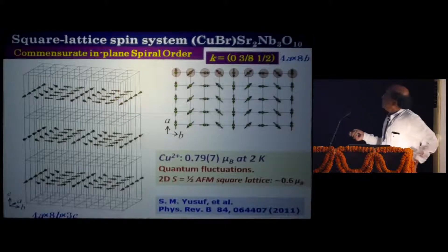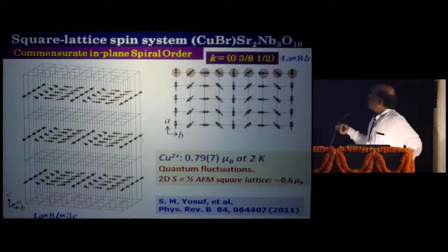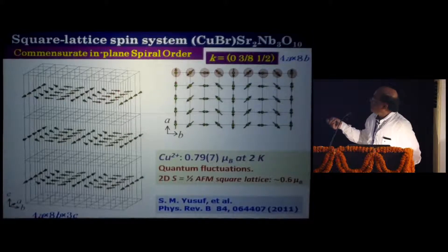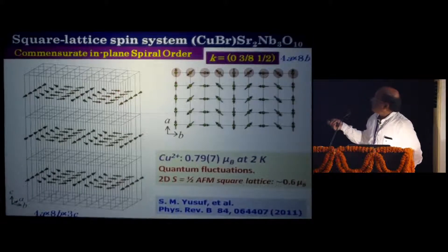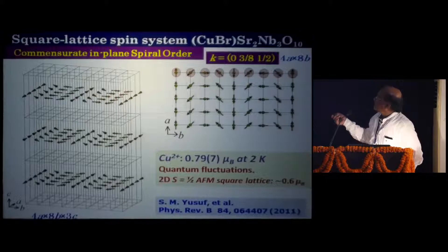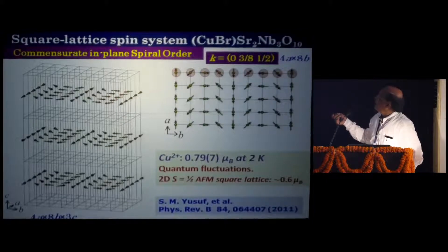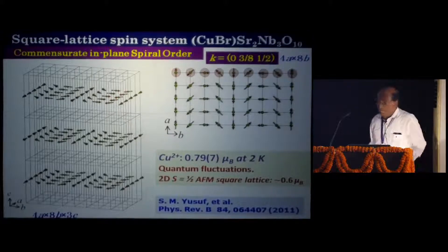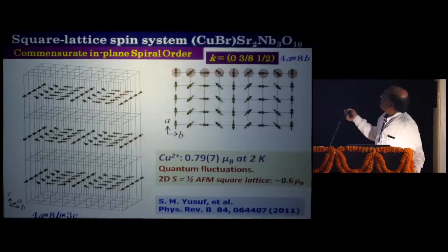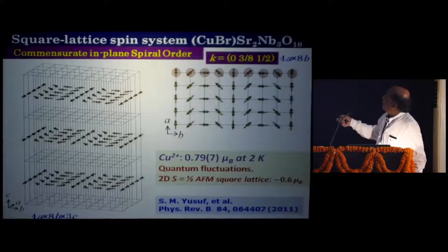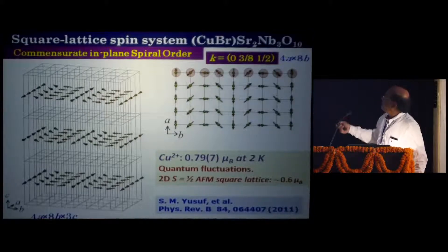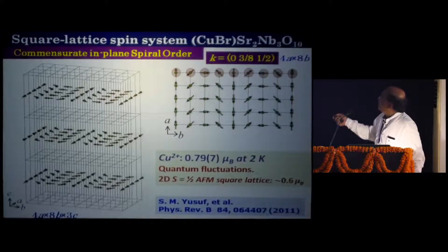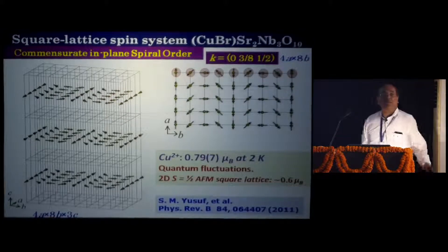By doing a neutron diffraction experiment at 2 Kelvin, that is below the ordering temperature, we do get this kind of spiral structure in the copper plane. You see the copper spin is rotating in a spiral manner, and this is called propagation vector. What I have plotted here 4A by 8B, A is in the AB plane, and this is my C axis. In the AB plane 4A by 8B, you see what kind of spin arrangement is there with the spirality.